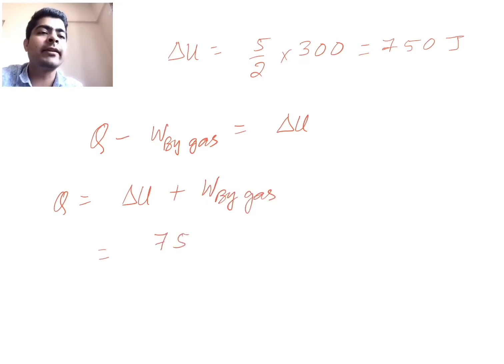So delta U is 750, plus work done by the gas is how much? 300. So we obtain 1050 joules. This is your answer.